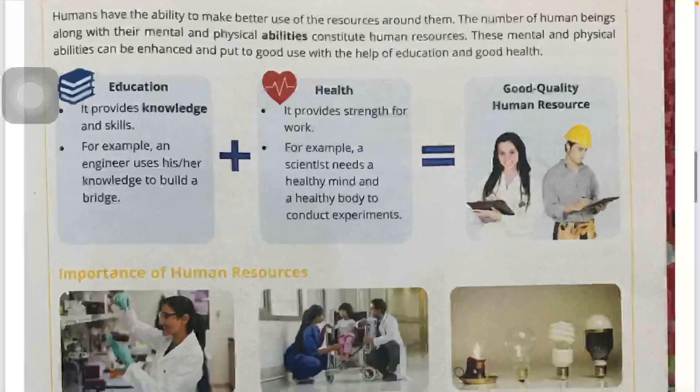For example, if we take education, we get knowledge and skills. Like an engineer — he will use his knowledge to build a bridge. He also needs good health. A scientist must be healthy in both mind and body so that he can conduct experiments. This is what we mean by good-quality human resources.